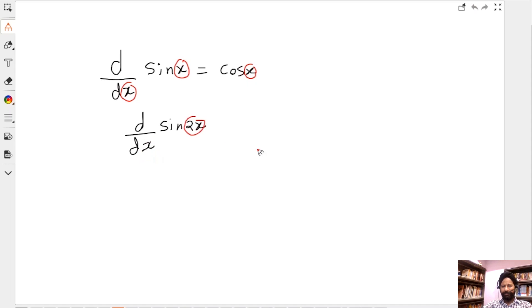You got to use the chain rule. Make them match by writing d/d(2x) of sin 2x, which is cos 2x, but then multiply by the derivative of the new variable with respect to the original variable. This gives you 2 cos 2x.